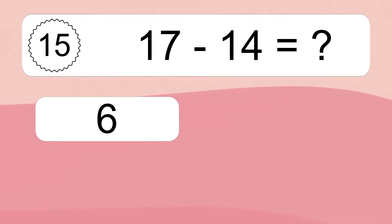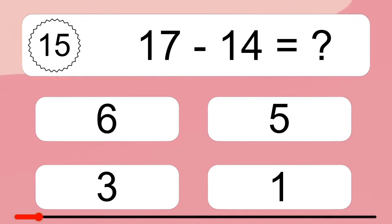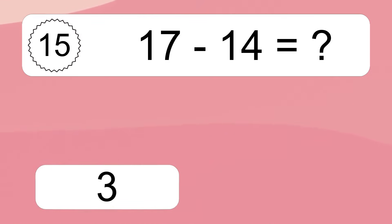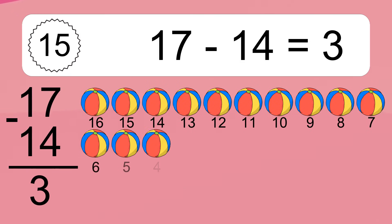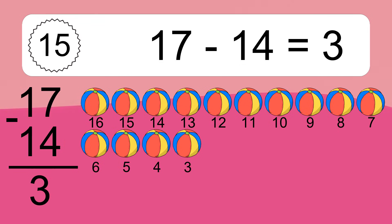17 minus 14 equals what? 17 minus 14 equals 3. Let's count it: 16, 15, 14.